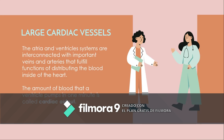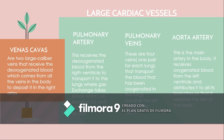The atria and ventricle system are interconnected with important veins and arteries that fulfill functions of distributing the blood inside the heart, such as the vena cavae, pulmonary artery, pulmonary veins, and aortic artery. The amount of blood that a ventricle pumps in one minute is called cardiac output. The pulmonary arteries receive deoxygenated blood from the right ventricle to transport it to the lungs where gas exchange takes place, exchanging O2 and CO2.